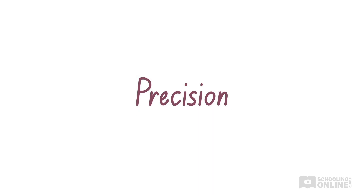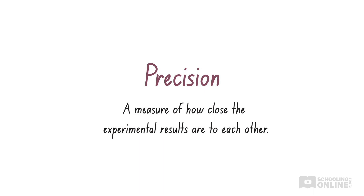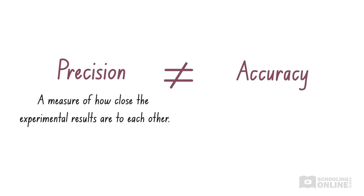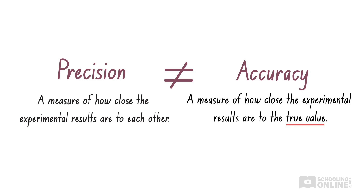Let's discuss the next aspect of reliability, which is precision. Precision is a measure of how close the experimental results are to each other. But beware — when discussing experimental results, use the term precision with caution. Even though precise and accurate are synonyms in normal vocabulary, they are completely different things in science. Accuracy is a measure of how close the experimental results are to the true value, whereas precision is a measure of how close the experimental results are to each other. Make sure you don't confuse these.